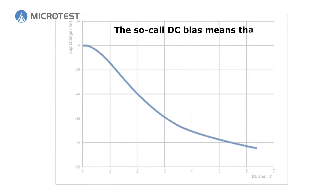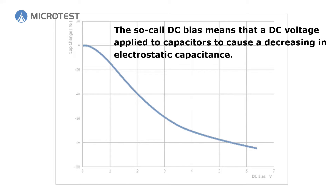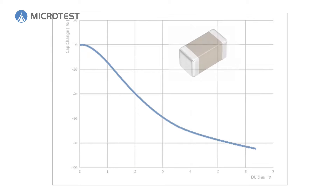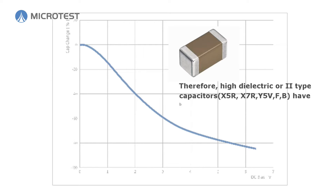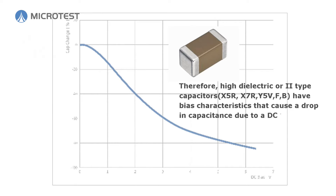The so-called DC bias means that a DC voltage applied to capacitors causes a decrease in electrostatic capacitance. Therefore, high dielectric type-2 capacitors — X5R, X7R, and Y5V — have bias characteristics that cause a drop in capacitance due to DC voltage.